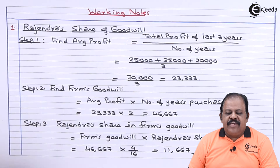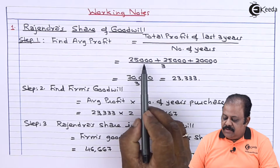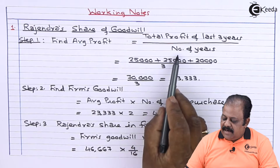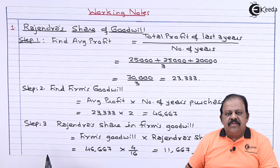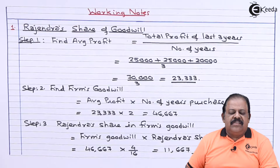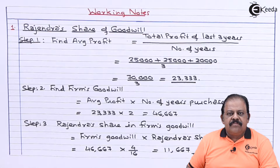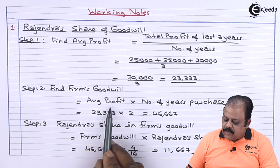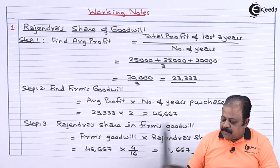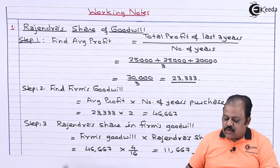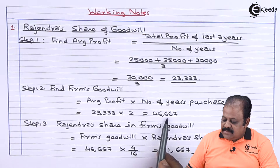Working Note 1 — Rajendra's share of goodwill. Step 1: Find average profit. Total profit of last three years = 25,000 + 25,000 + 20,000 = 70,000. Average profit = 70,000 ÷ 3 = 23,333. Step 2: Find firm's total goodwill = average profit × number of years' purchase = 23,333 × 2 = 46,667.